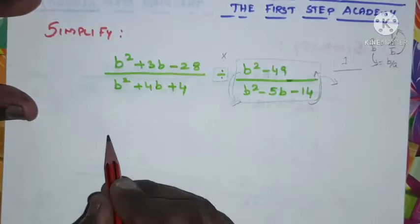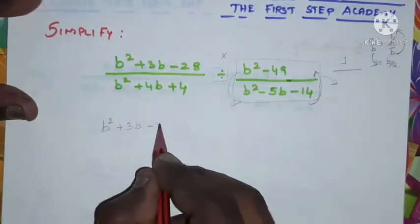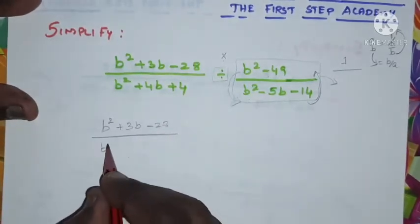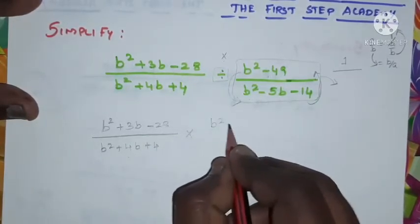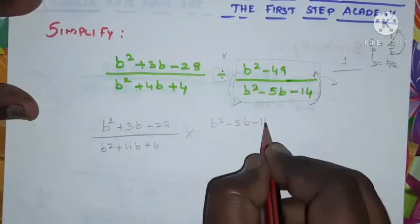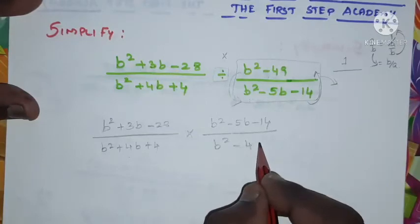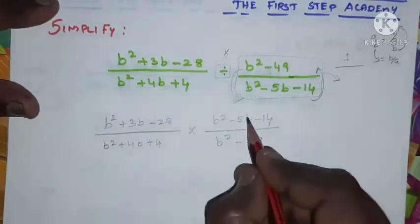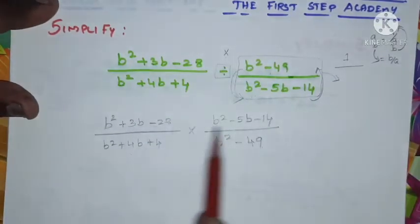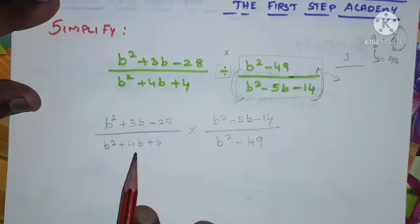Rewriting the problem with multiplication: b squared plus 3b minus 28 divided by b squared plus 4b plus 4, multiplied by b squared minus 5b minus 14 divided by b squared minus 49. We have three polynomials and we are going to factorize all three, find their respective factors, and substitute them in the respective places.